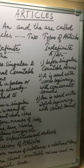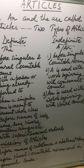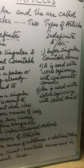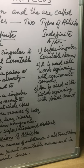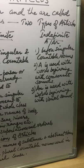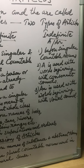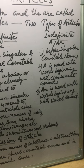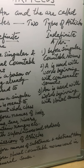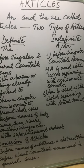Coming to the indefinite article, 'a' or 'an' is used with nouns which are singular and countable — for example, 'a book', 'a chair', 'a table'. These indefinite articles are of two types: 'a' and 'an'. 'An' is used with words beginning with vowel sounds — for example, 'an ass', 'an enemy', 'an instant', 'an orange', 'an umbrella'.